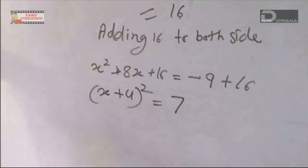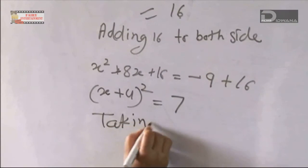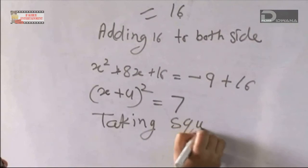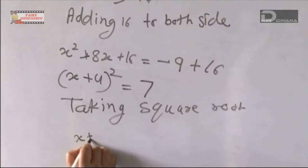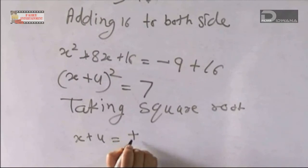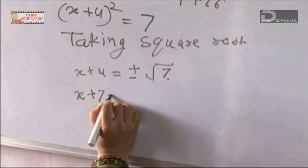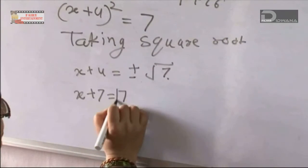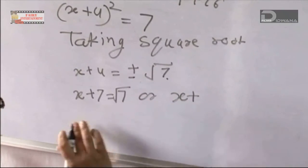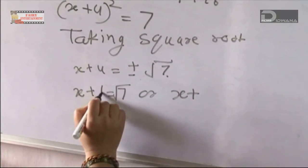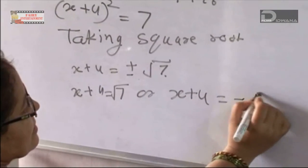We take the square root. Taking square root: x + 4 = √7. So x + 4 = √7 or x + 4 = -√7.